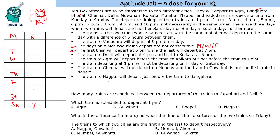There is a five-hour difference between the Bangalore and Bhopal trains. Let's find the possible pairs with a five-hour difference: 1&6, 2&7, 3&8, 4&9, or 5&10. Now let's eliminate possibilities. 1&6 is not possible because 6 PM is already taken. 2&7 is not possible because 7 PM is taken. So we are left with 3&8, 4&9, and 5&10.